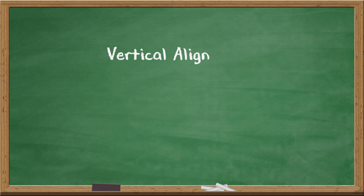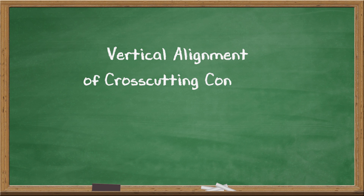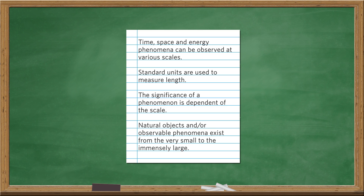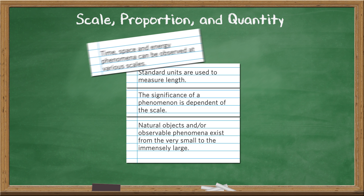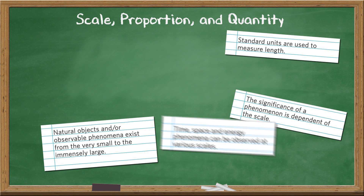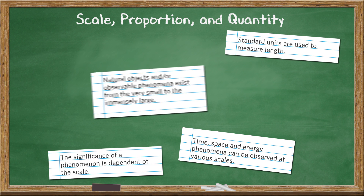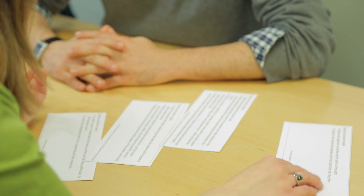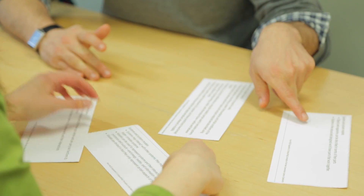In the first activity, participants will do what we call a vertical alignment of two CCCs. Basically, each group will receive the NGSS descriptions of what the CCC looks like at each grade band, which are cut into strips and randomized. What they don't know, however, is which strip correlates to which grade band. Their task is to organize the descriptions into a logical sequence that represents the deepening of that cross-cutting concept from kindergarten to high school.